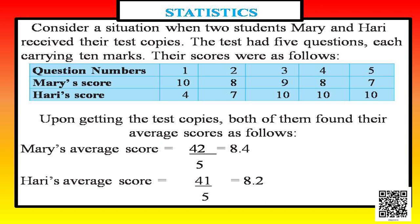In question four she got eight and in question five she got seven. In the third row we have Hari's score: four in question one, seven in question two, ten in question three, ten in question four, and ten in question five.